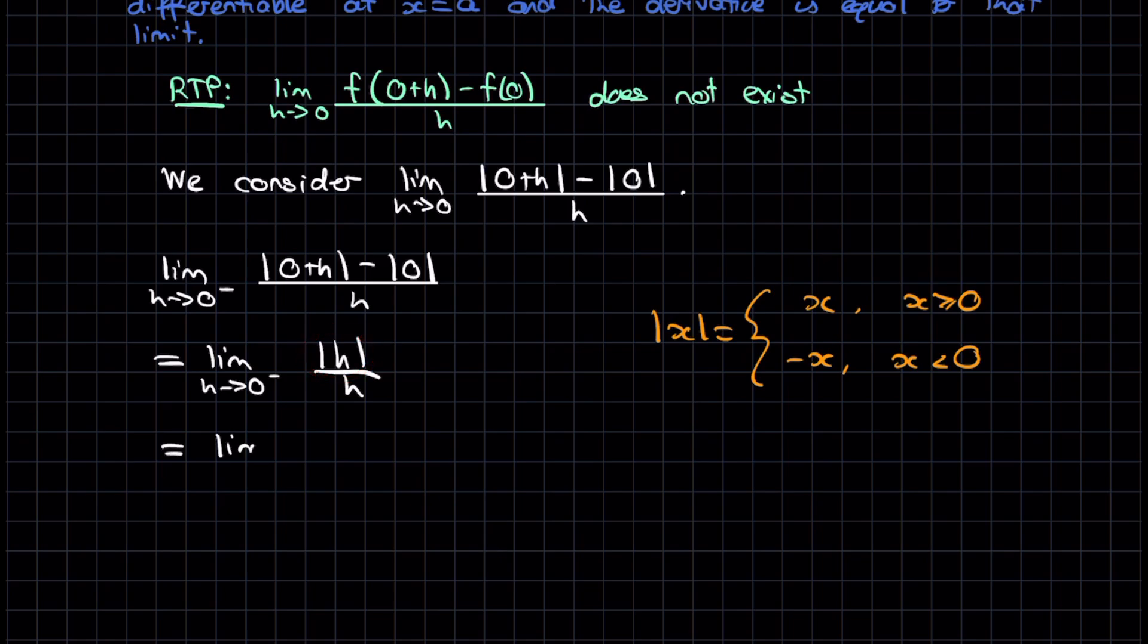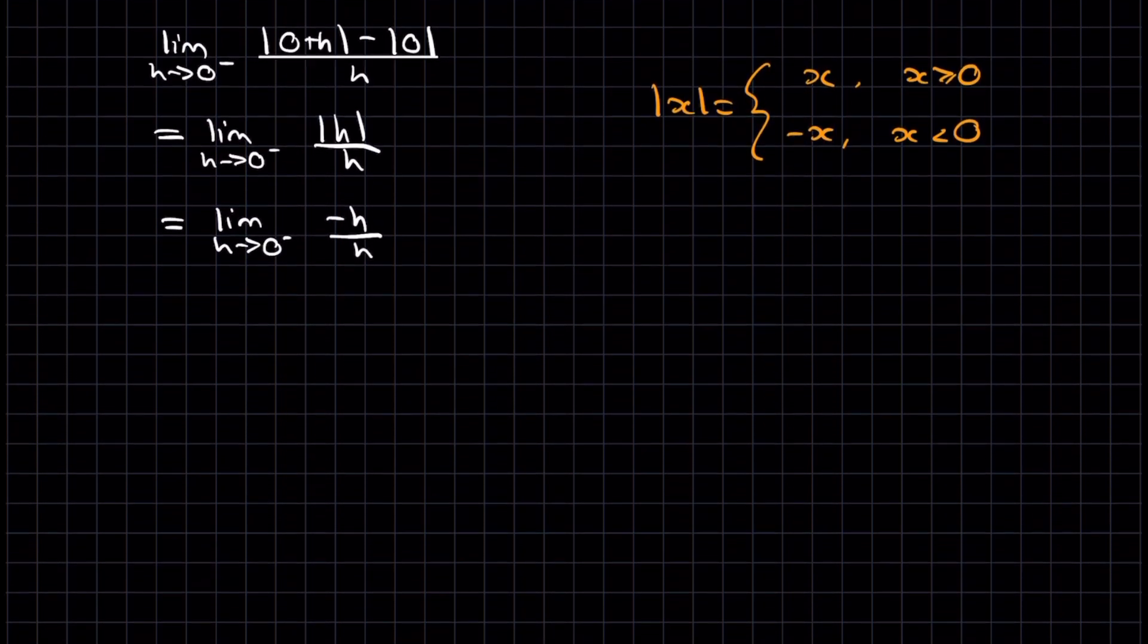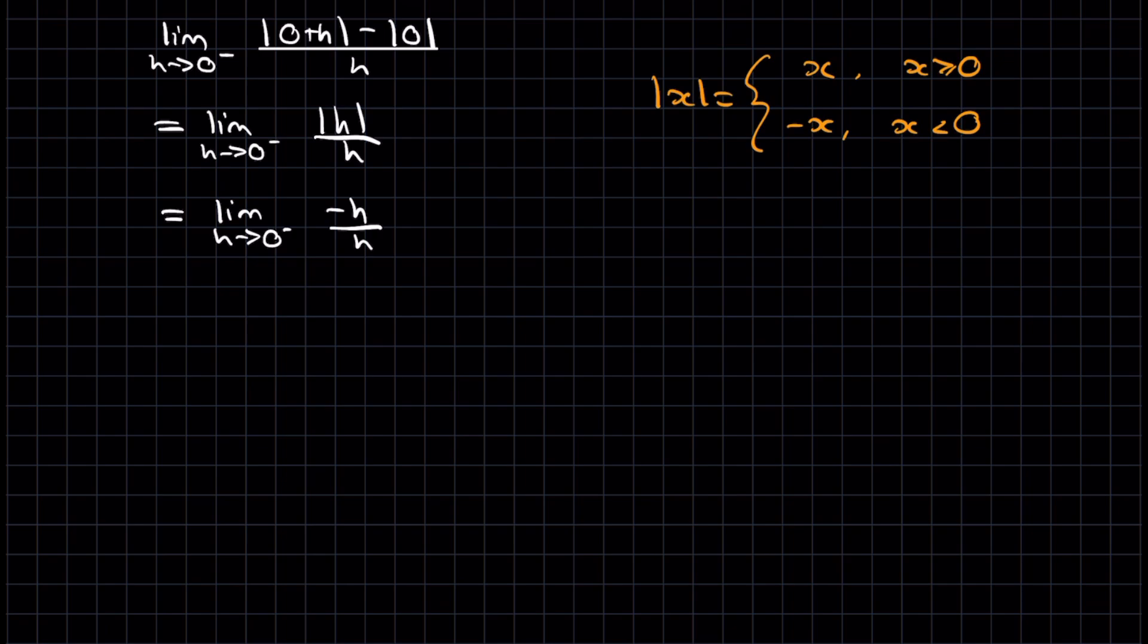So this is the limit as h approaches 0 from below of minus h on h. Now I'm able to do some manipulation. These h's cancel. I'm left with the limit as h approaches 0 from below of minus 1. But minus 1 is unaffected by h, so it just remains as minus 1. So my left-hand limit is equal to negative 1.